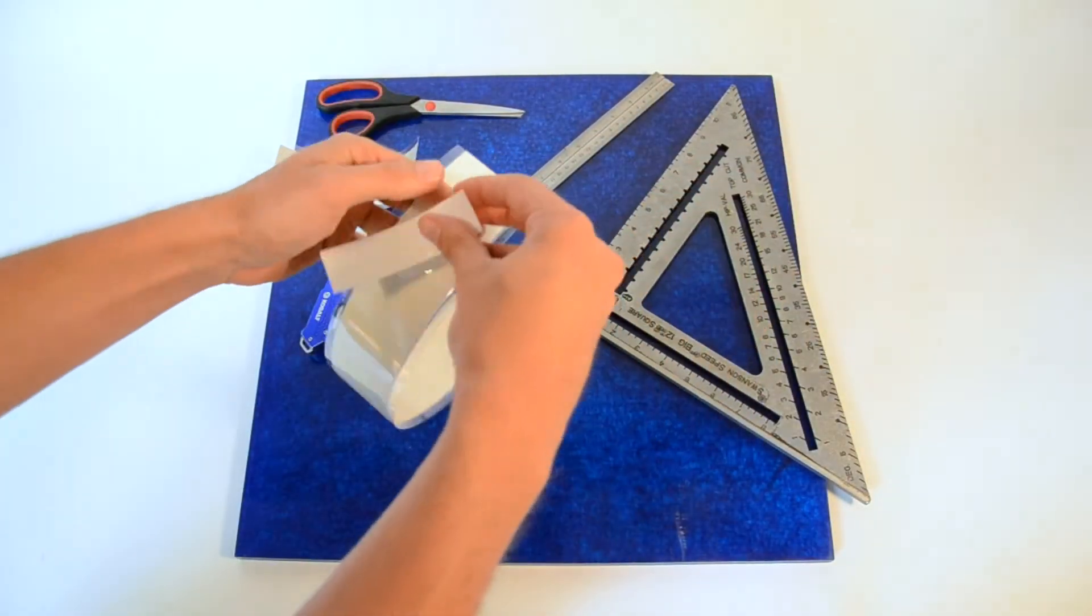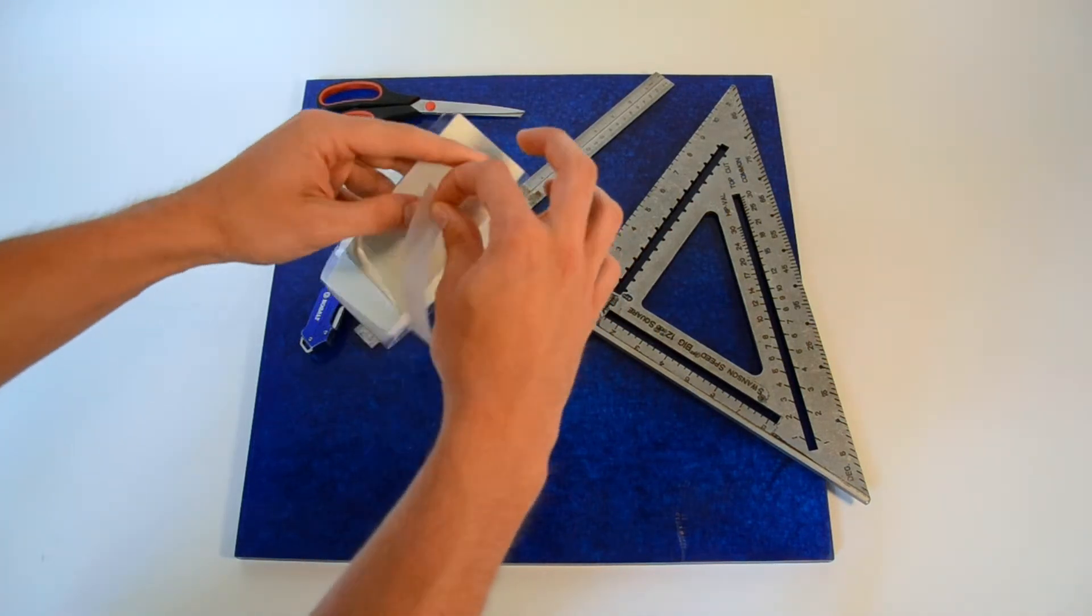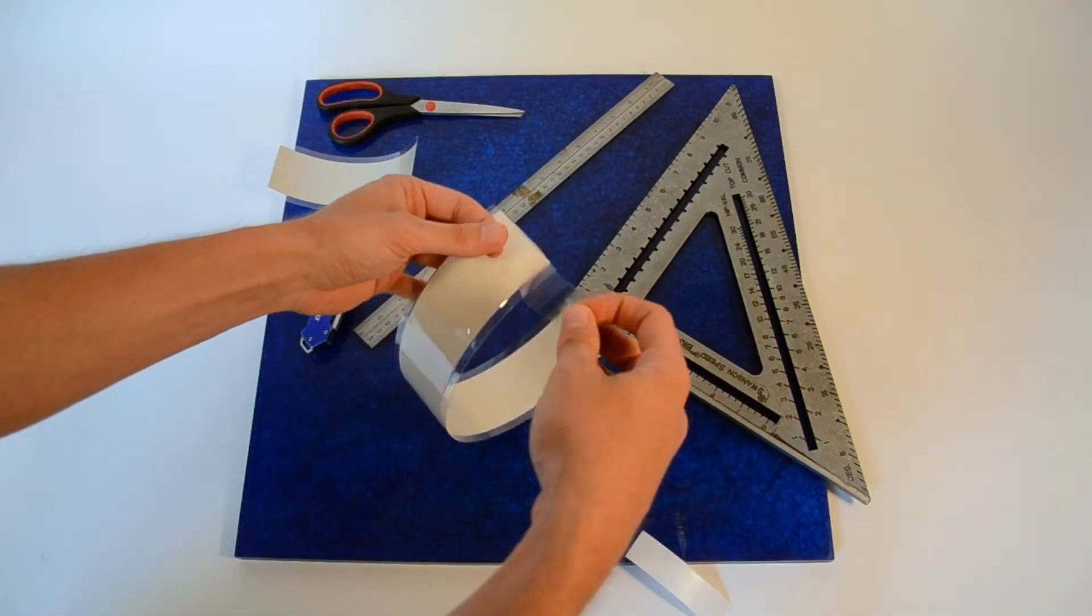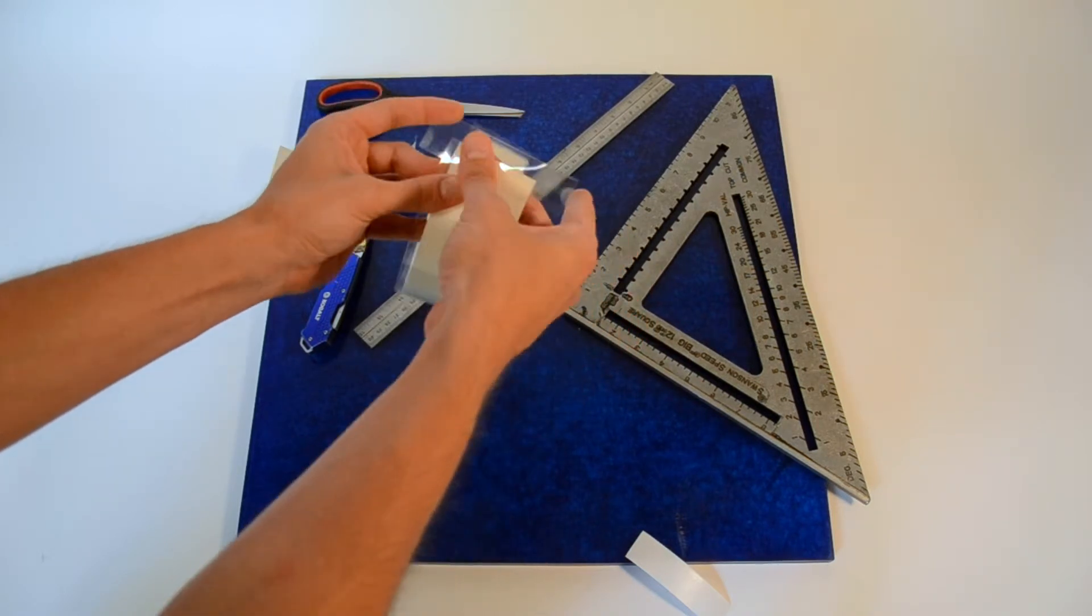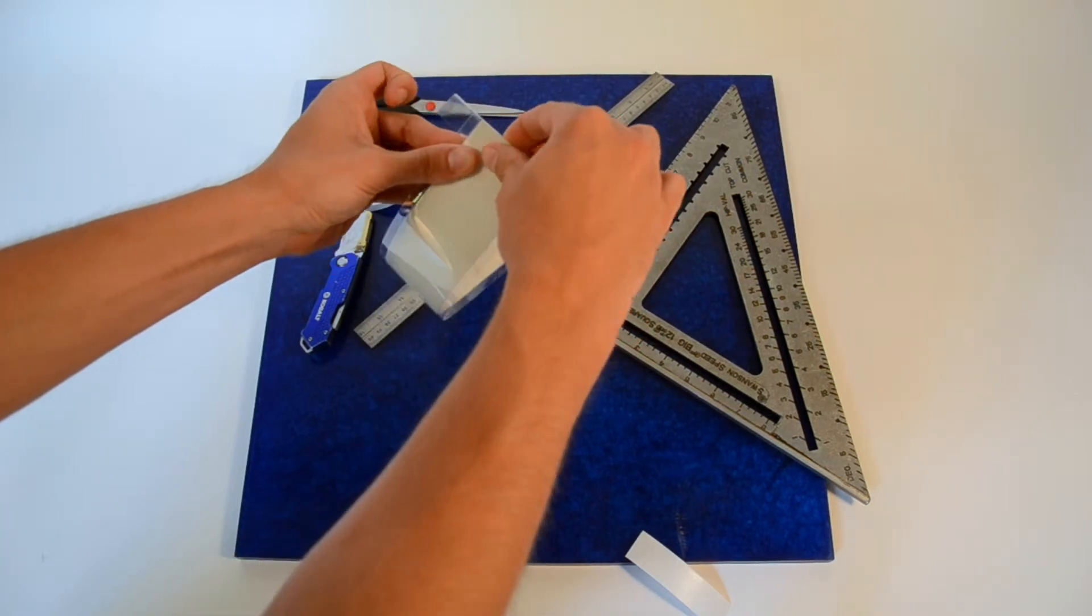To seal the lamp, on the cut end, place enough in-seal tape to overhang the edges and to evenly fold over both sides of the lamp. Press to ensure no bubbles form underneath.